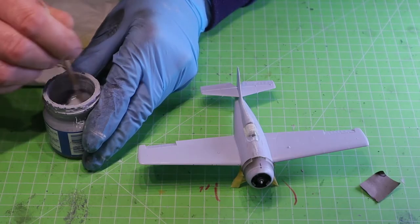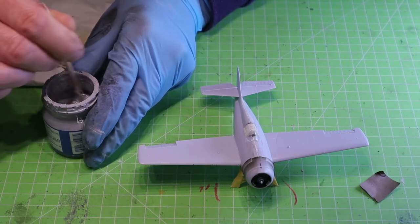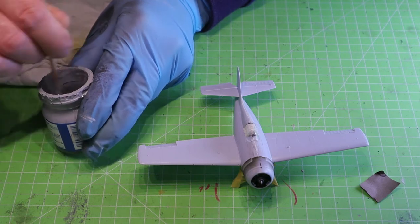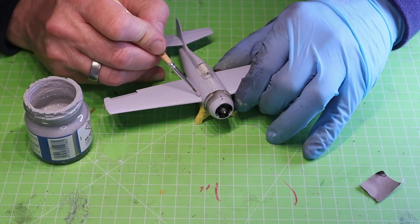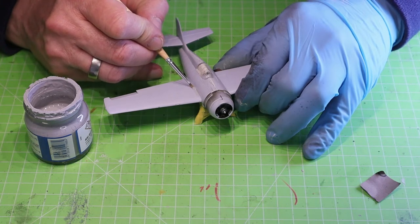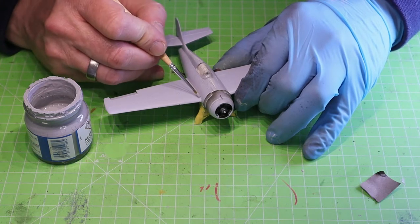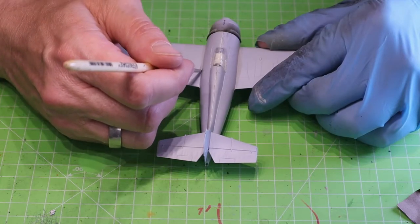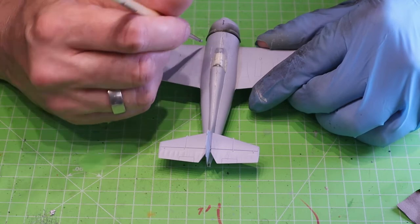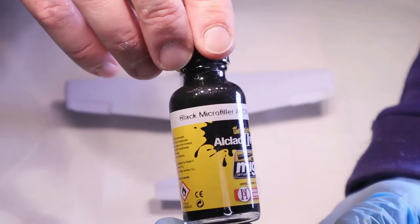And I'm not being paid by Ammo Mig in any way. It's just a very good glue, a very good product. I really like it. I still use Mr. Surfacer to even the surface there a bit. It's the, I think, 1000 grit. It's important to not shake it because I found out when you shake it, you get these bubbles.